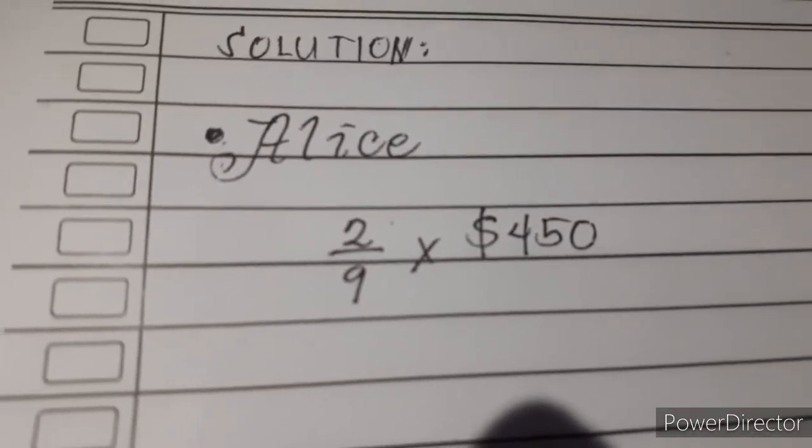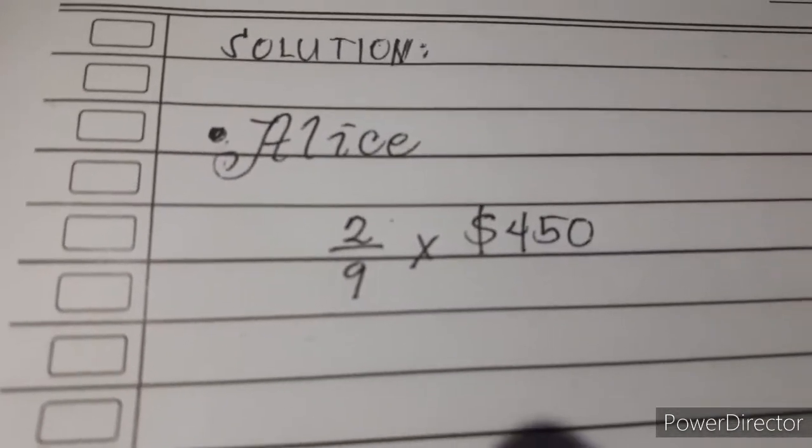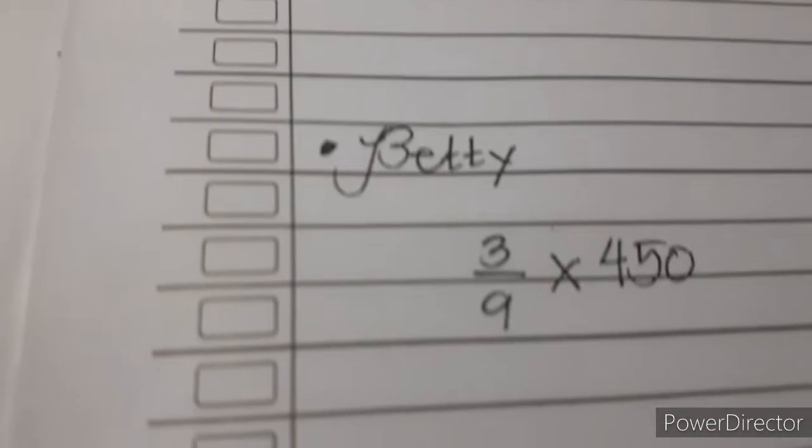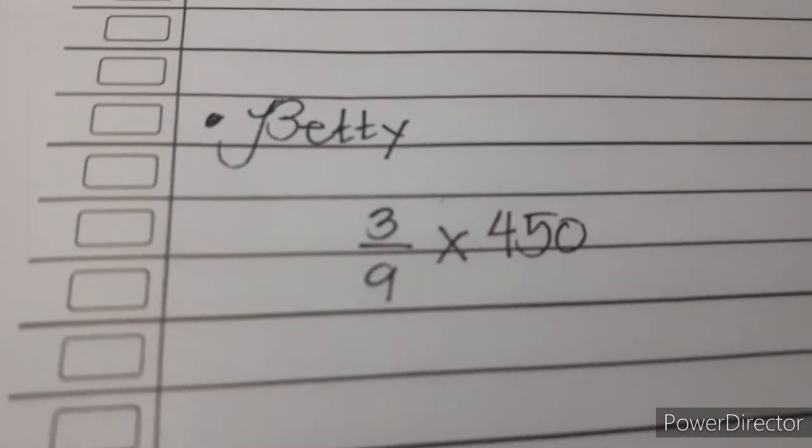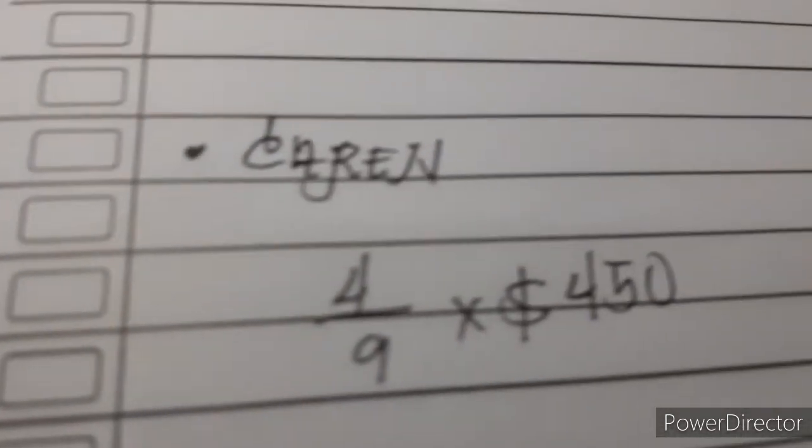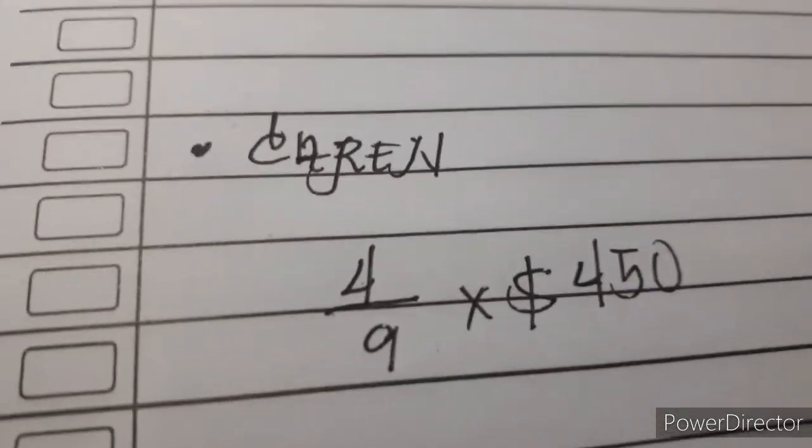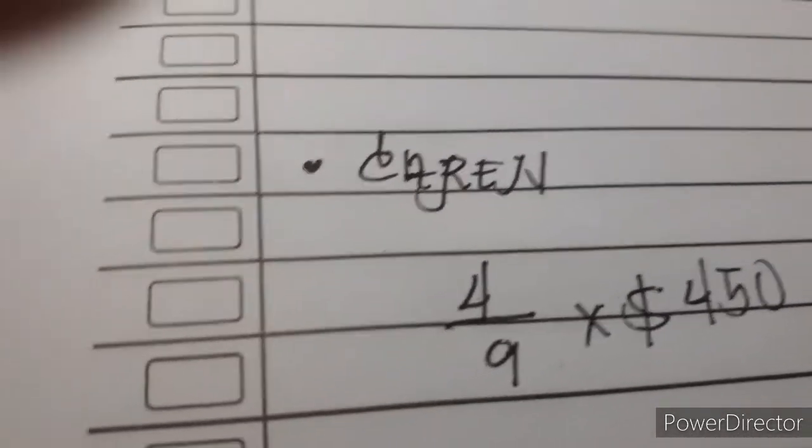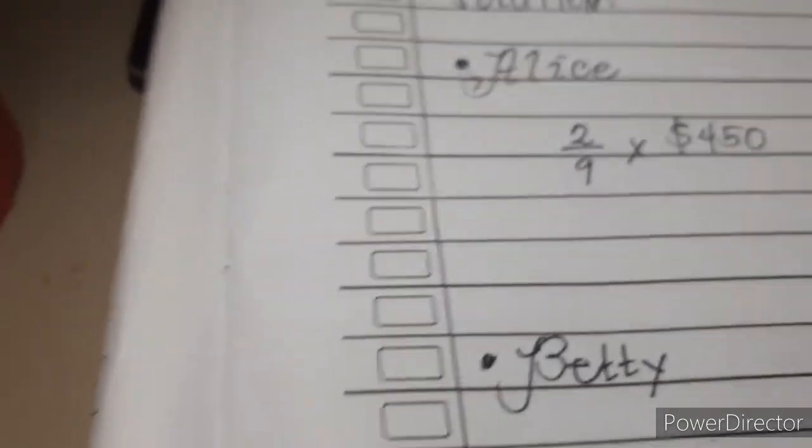For our solution, Alice takes 2/9 of $450, Betty takes 3/9 of $450, and Karen takes 4/9 of $450. Let's compute how much each of them will receive.